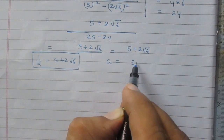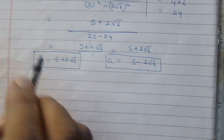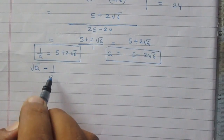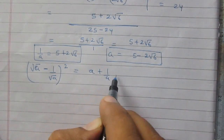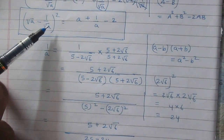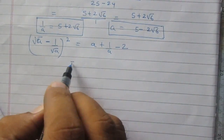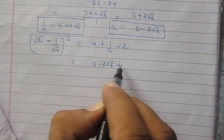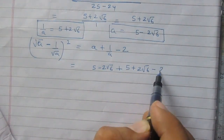We know that a is equal to 5 minus twice of square root 6, as given. Using the relation we derived, square root a minus 1 upon square root a, whole squared, equals a plus 1 upon a minus 2. After substituting, a equals 5 minus twice of square root 6, and 1 upon a equals 5 plus twice of square root 6, then minus 2.